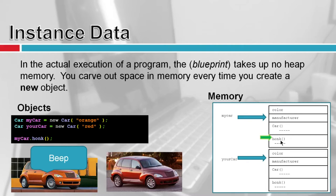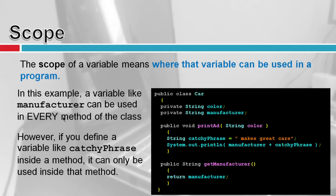The scope of a variable means where that variable can be used in the program. A variable like manufacturer, declared at the class level, can be used in every method of the class — it doesn't die off when a curly brace ends. However, if I define a variable like catchyPhrase inside a method, it can only be used inside that method. Once I hit the closing curly brace, it dies off. If it's defined outside any function but inside the class, it applies to every function in that class.